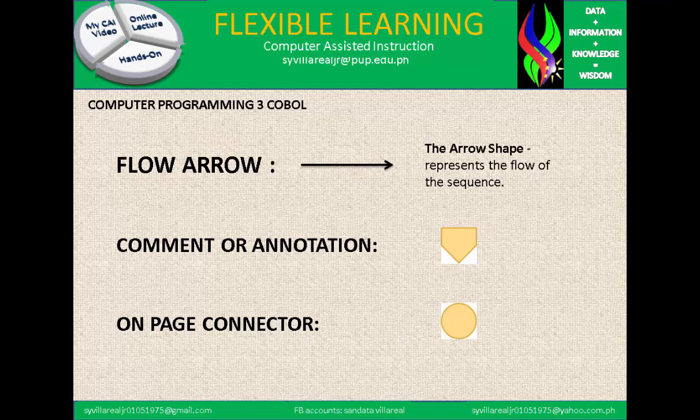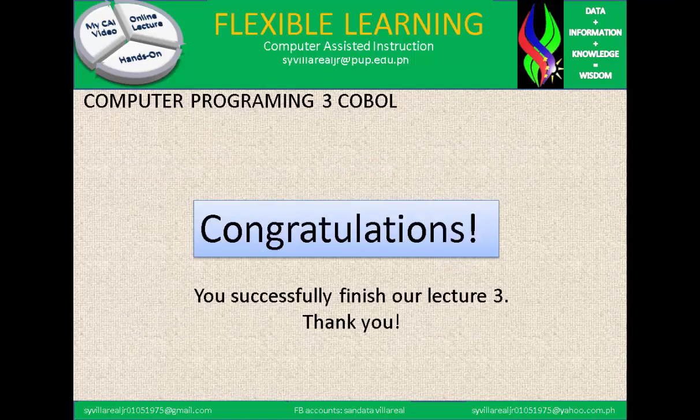Comments or annotation is another symbol. The last one is the on-page connector — if the flowchart is more than one page, you put a circle with a letter such as 'A', and on the other page, you put 'A' again, so they connect to each other across pages.